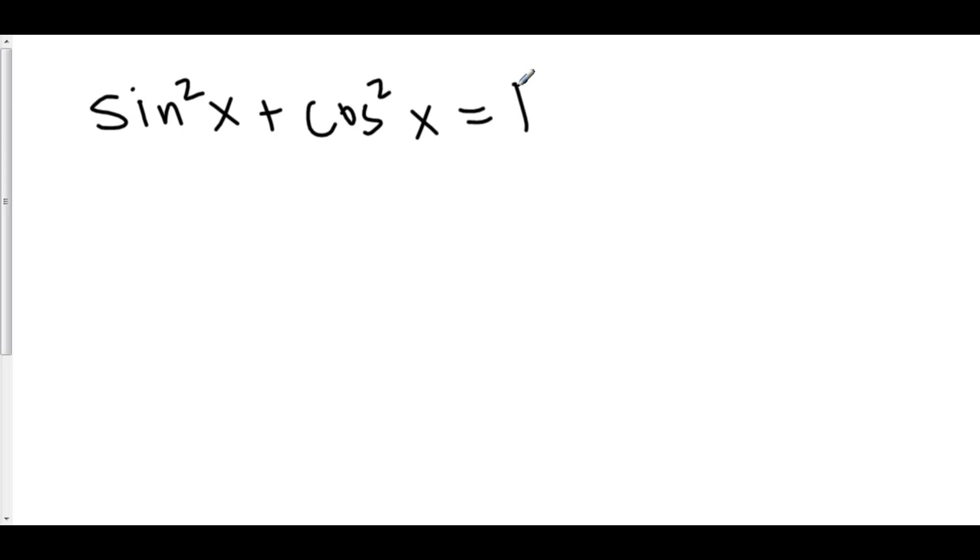Then what happens if you divide everything by sine squared? Well, sine squared divided by sine squared would be 1. Cosine squared divided by sine squared would be cotangent squared. And 1 divided by sine squared would be cosecant squared.